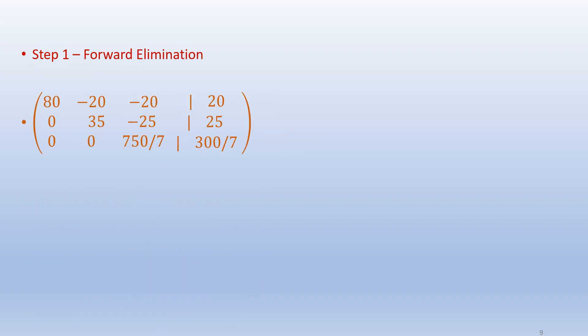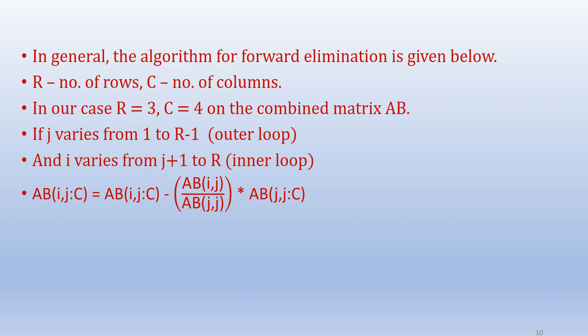Once this is done, all the elements below the main diagonal of matrix A have become zero, and the first step is now complete. In general, if there are n unknowns — that is, r rows and c columns on the combined [A|b] matrix — the algorithm for forward elimination is given below.